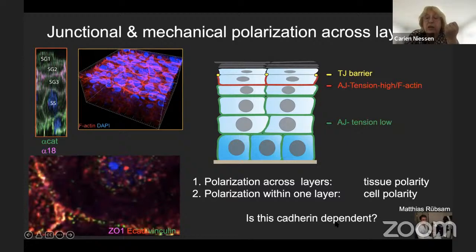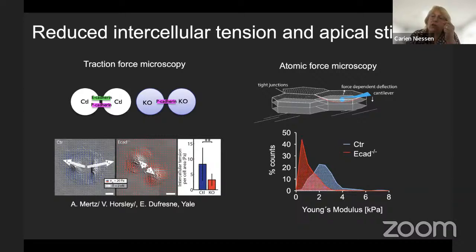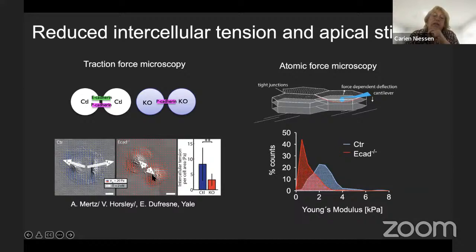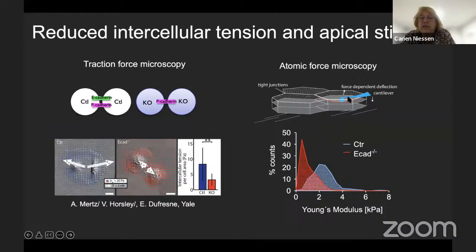Zooming into SG2 cells: the apical tight junctional layer, shown in pink as claudin-1, is most apical, supported by basolateral cadherin-vinculin positive junctions. What we have in the epidermis is mechanical polarization of junctions — not only across layers, with high-tension adherence junctions marked by vinculin and unfolded alpha-catenin only in the tight junction-forming layer, but even within this very flat layer, we see classical cell polarity with tight junctions apically positioned.